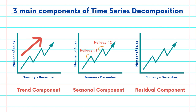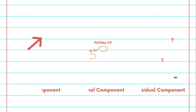The third is the residual component. The residual component represents the unexplained or random variations in the time series — it's what's left after accounting for the trend and seasonality. By analyzing the residual component, we can identify irregular events or anomalies that might affect our data.